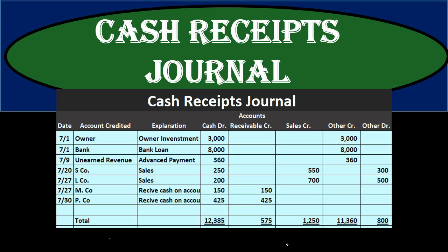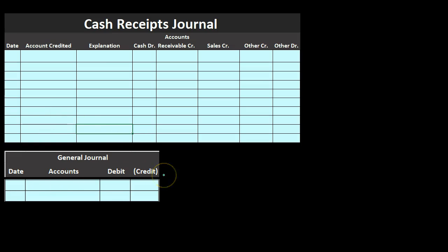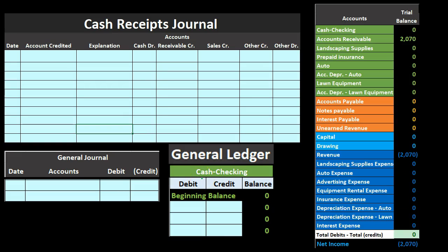The cash receipts journal is most effective when we have many transactions that are much the same. We record all those transactions for the time period — whether that be the day, week, or month; in our case the month — then sum them up and record one journal entry at the end of the period. Once done with the cash receipts journal we do one general journal entry, which may seem like more work, but it's just one entry rather than many separate entries throughout the period. That journal entry is then posted to the general ledger, which is used to create the trial balance.